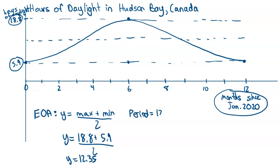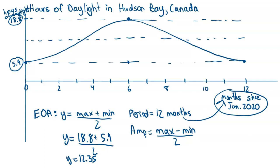The period is 12 months — one year — expressed in terms of the x axis values. If days were on the x axis instead, the period would be 365 days. For amplitude, we take the maximum minus the minimum divided by two: 18.8 minus 5.9 divided by two gives 6.45. So we've identified the equation of the axis, period, and amplitude for this graph.